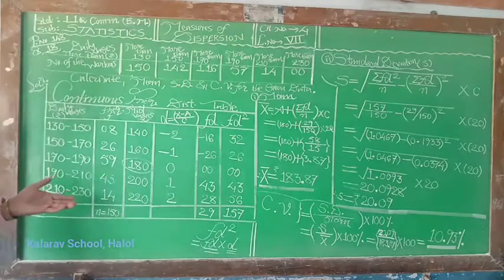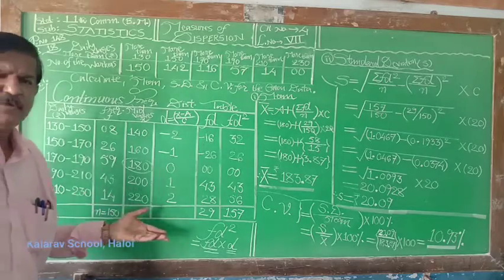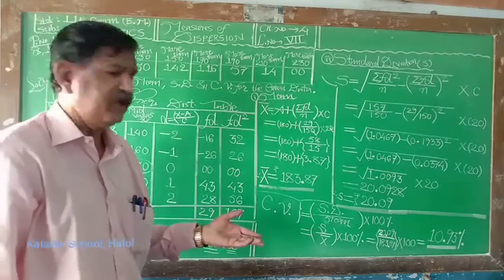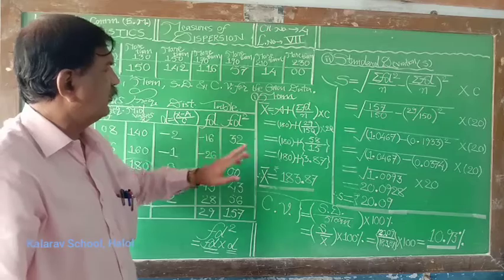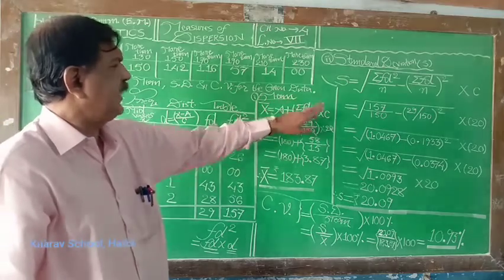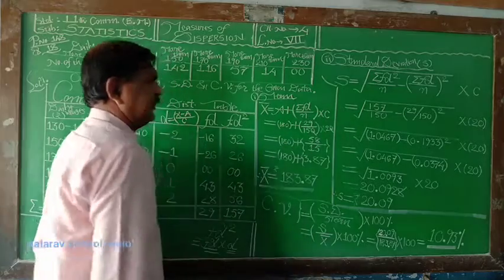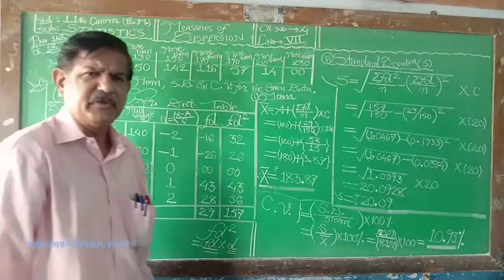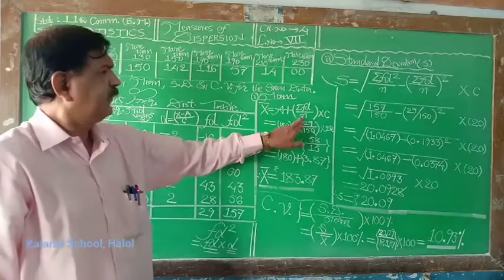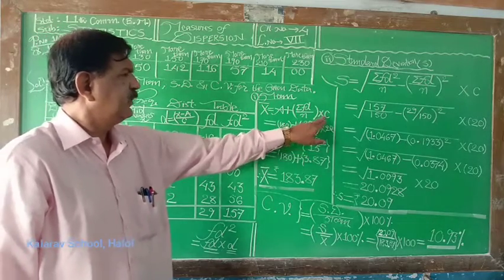This is the shortcut method. Mean x bar is given by u plus sigma fd upon n multiply by c. As a continuous frequency distribution is given, n frequency total 150, c class interval 20.